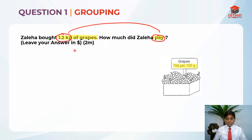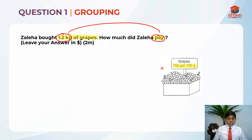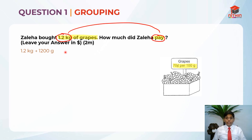Let's move on to the first step. 1.2 kilograms has a different unit than 100 grams — kilograms versus grams — so we should make the units the same. I'm going to convert 1.2 kilograms into grams. 1.2 kilograms converts to 1,200 grams. To convert from kilograms to grams, we multiply by 1,000. To convert from grams to kilograms, we divide by 1,000.